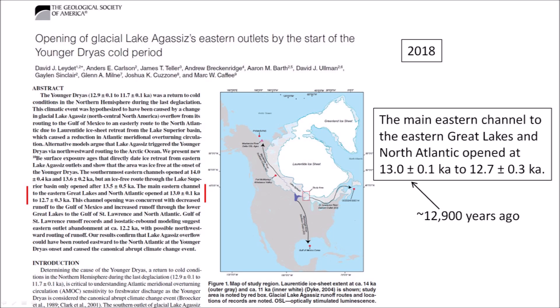This channel opening was concurrent with decreased runoff to the Gulf of Mexico and increased runoff through the lower Great Lakes to the Gulf of St. Lawrence and North Atlantic. If the flow through the St. Lawrence River opened only at 13.0 ± 0.1 ka, this means that 12,900 years ago, at the time of the proposed extraterrestrial impact, there was still enough ice in the Michigan Peninsula to block the eastward flow of water. This also suggests that the extraterrestrial impact could have been responsible for breaking up the ice and starting the flow of water through the St. Lawrence River.